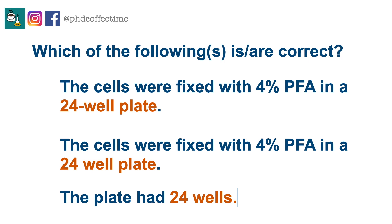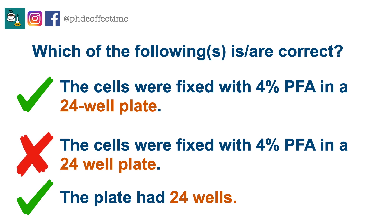The cells were fixed with 4% PFA in a 24-well plate. This requires hyphenation because '24-well' is now an adjective, so you need a hyphen. But when you are simply explaining that there are 24 wells, you don't need a hyphen.